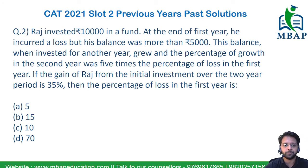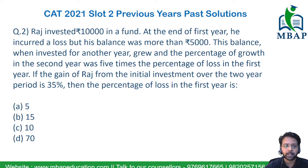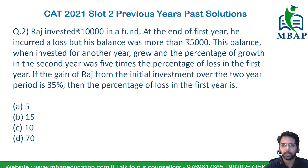The next question says: Raj invested 10,000 in a fund. At the end of the first year, he incurred a loss but his balance was more than 5,000. This balance when invested in another year grew, and the percentage of growth in the second year was 5 times the percentage of loss incurred in the first year.